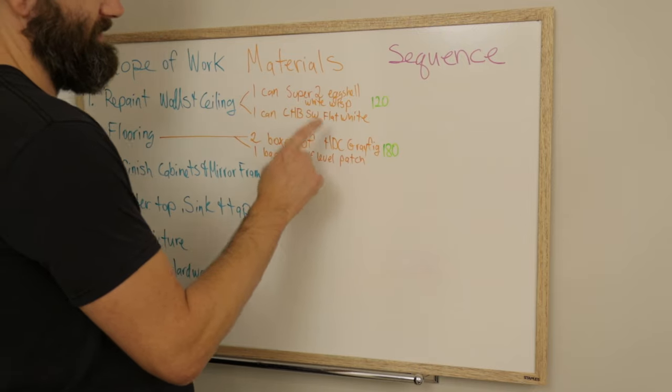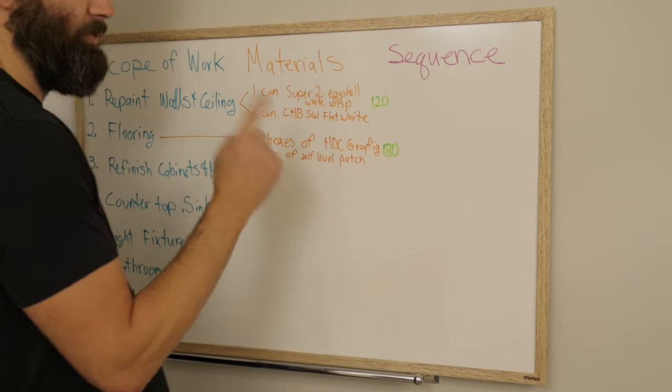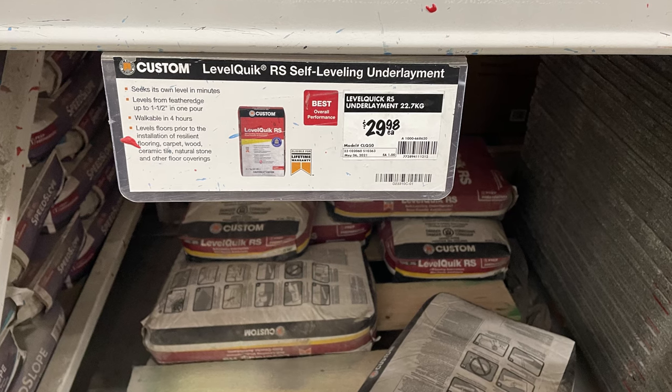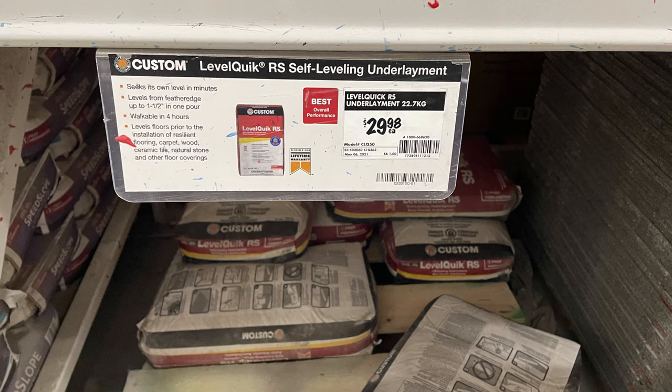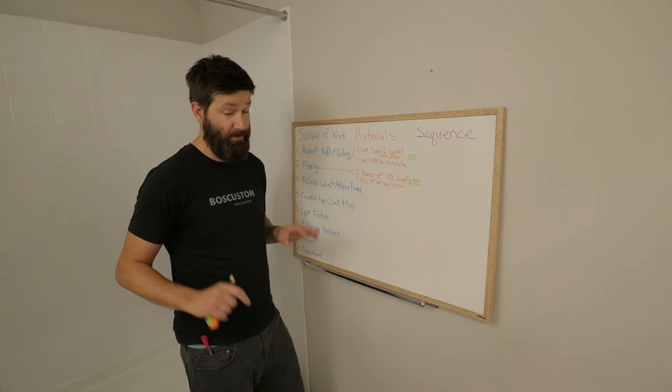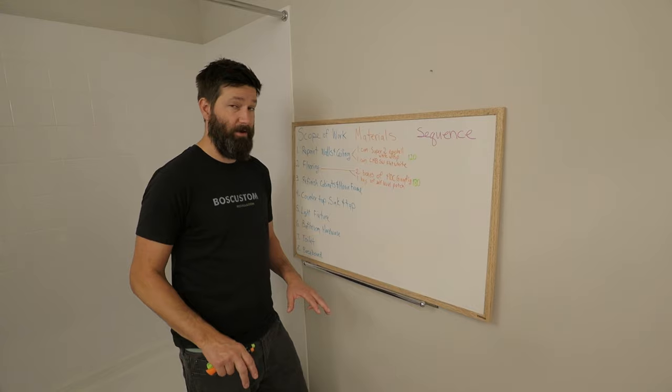So I'm going to be installing the vinyl plank. I'm going to need two boxes of the home decorator collection gray fig. I'll need one bag of self-level patch in order to patch over this tile floor so that I can install the vinyl plank right on top of it.